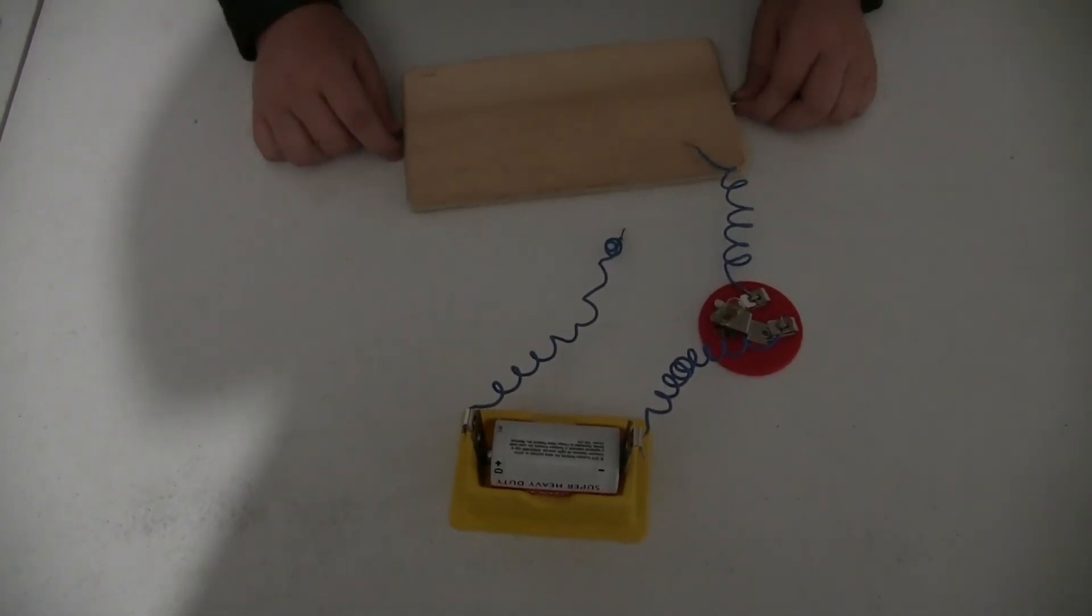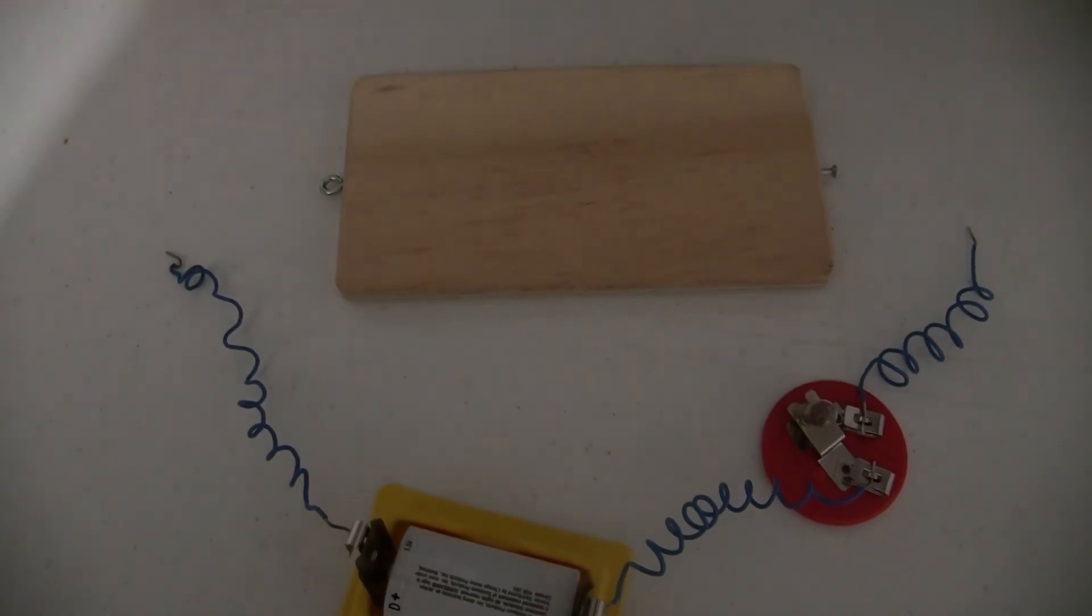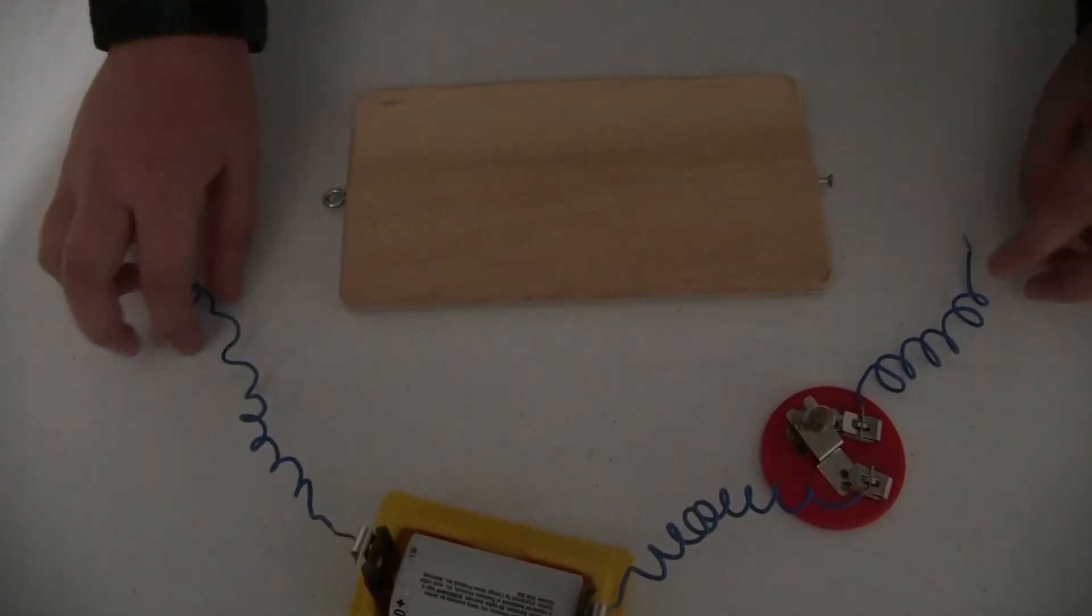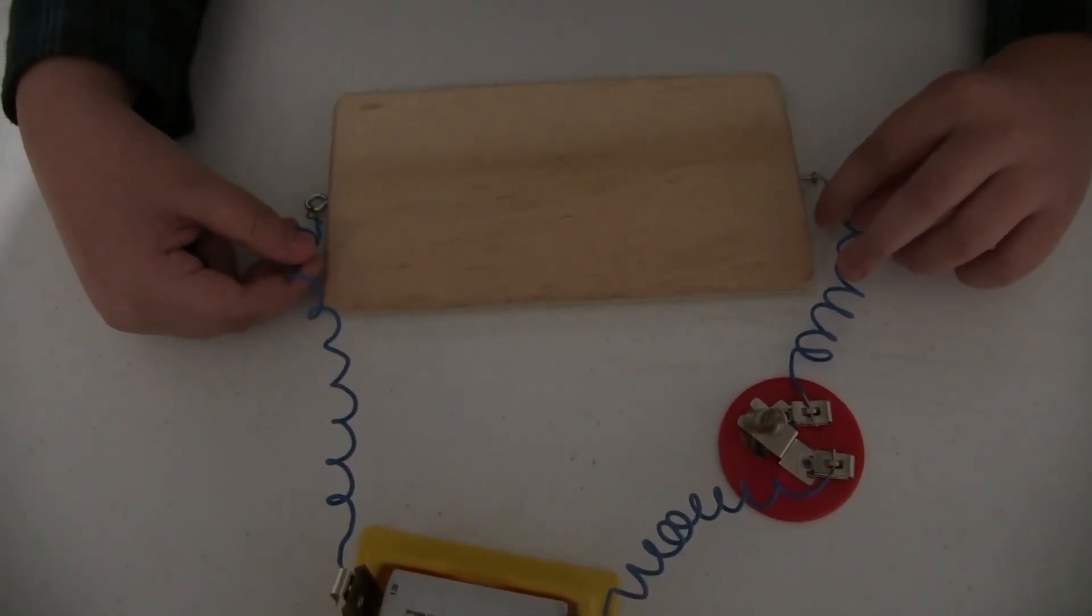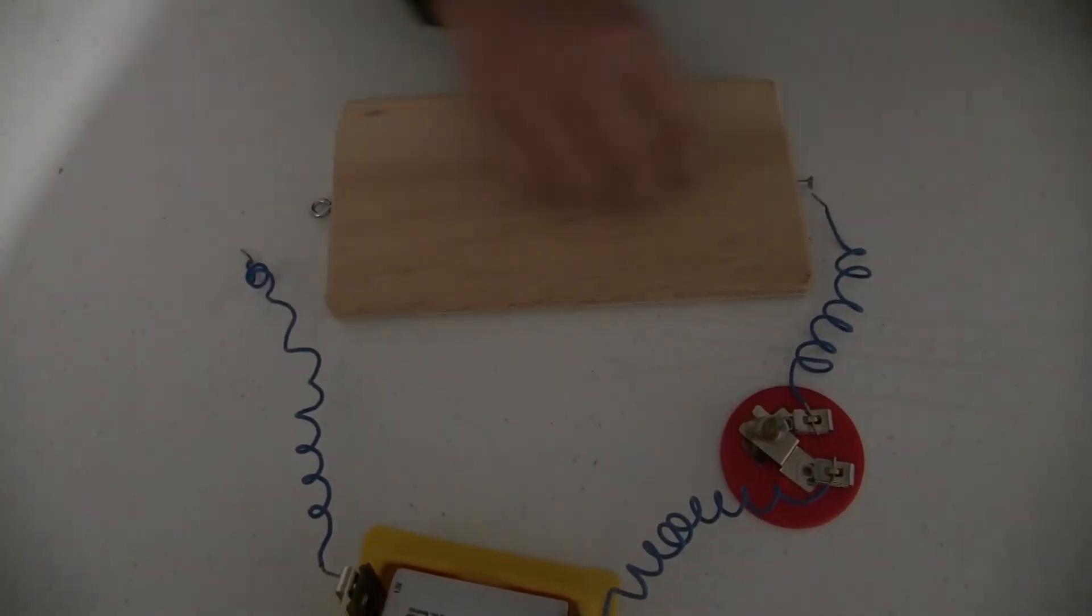Now that we know that aluminum is conducting, wax is not, we're gonna try wood and it's not working because as you can tell the only things that are lining up are the metal parts.